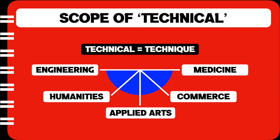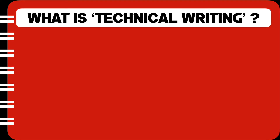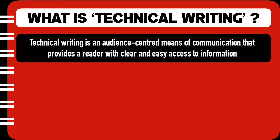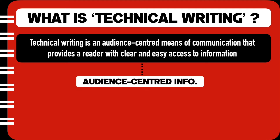So now that we understand the scope of the word technical, let us have a look at the definition of technical writing. Technical writing is an audience-centered means of communication that provides a reader with clear and easy access to information. So again, if I boil this down to simple words, it means that technical writing is audience-centered information.